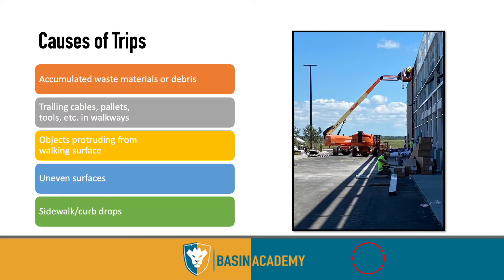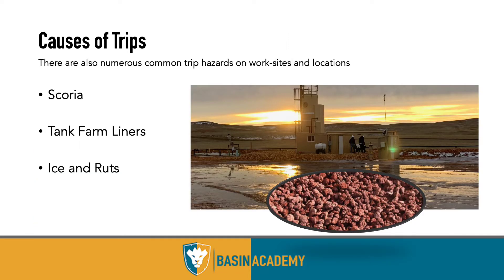Other trip hazards include accumulated waste, cables, pallets, and tools in walkways, objects protruding from walking surfaces, uneven surfaces, and sidewalk curb drops — especially on construction sites. At a Costco construction job, there was a lot of material in the walkway where workers were potentially walking — poor planning on the contractor's part. Scoria, tank farm liners on production facilities, ice, and ruts around locations are all potential causes of trips.